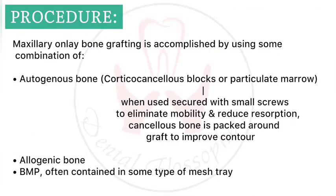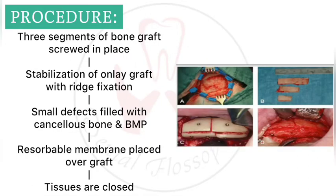Maxillary only bone grafting uses a combination of autogenous bone, allogenic bone, and BMP contained in a mesh tray. Corticocancellous blocks or particulate marrow are taken and secured with small screws to eliminate mobility and resorption. Cancellous bone is packed around the graft to improve contour. Three segments of bone grafts are screwed into place with rigid fixation, small defects are filled with BMP and cancellous bone, covered with a resorbable membrane, and tissues are closed and sutured.